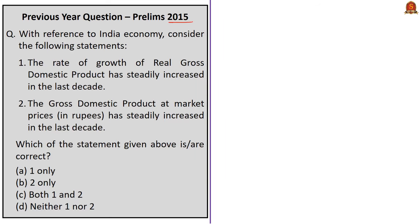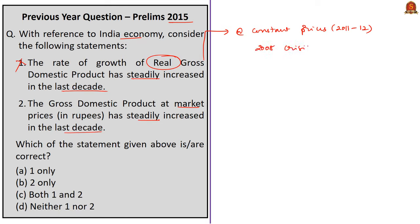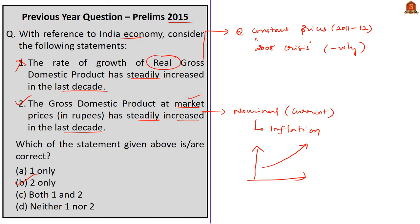This question was asked in the 2015 UPSC prelims with reference to Indian economy — consider the following statements: (1) The rate of growth of real gross domestic product has steadily increased in the last decade. (2) The gross domestic product at market prices has steadily increased in the last decade. The first statement is incorrect because real GDP is the GDP calculated at constant prices with respect to a base year of 2011-12, and real GDP has been fluctuating in the past decade — for example, owing to the 2008 global financial crisis, India's GDP was negatively affected. The second statement is correct because GDP at market prices is the nominal GDP based on current prices, which includes the impact of inflation, so considering the impact of inflation, nominal GDP has been increasing steadily. The correct answer for this question is option B — 2 only.